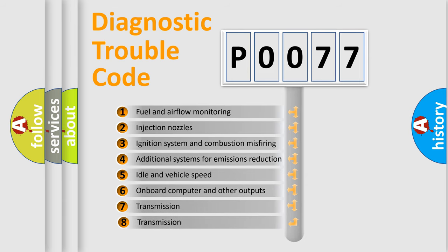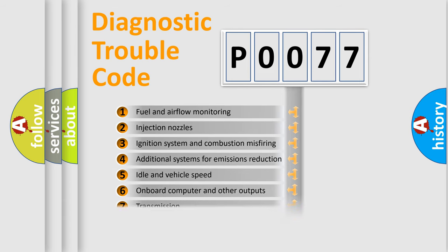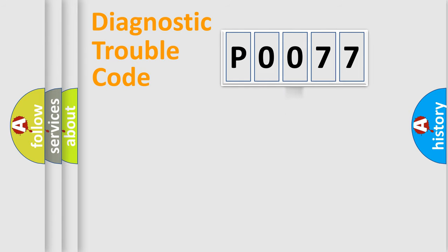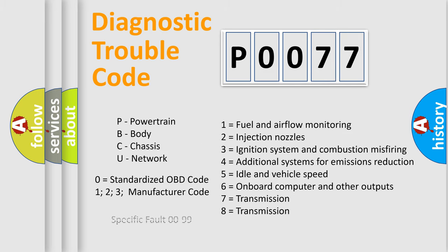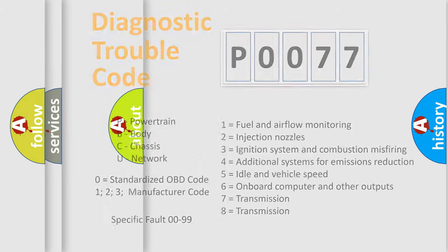The third character specifies a subset of errors. The distribution shown is valid only for the standardized DTC code. Only the last two characters define the specific fault of the group. Let's not forget that such a division is valid only if the second character code is expressed by the number zero.